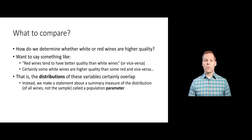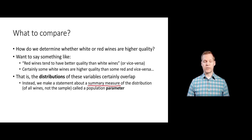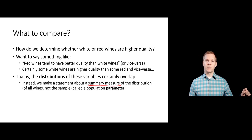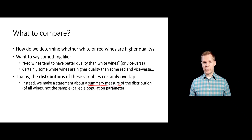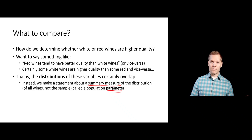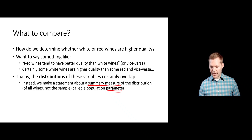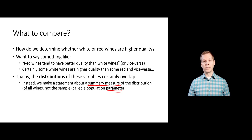Since the distributions of these variables overlap — some reds are better than some whites and vice versa — rather than making a statement about the entire distribution, we tend to make a statement about some summary measure of that distribution. When you summarize your sample data, you call those summaries statistics. When you summarize a population, you call those summaries parameters. What we ideally want to do is make statements and claims about our parameters — the true underlying parameters representing all the wines we could ever observe.